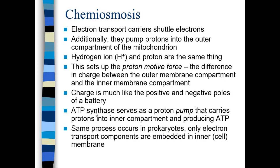The same process occurs in prokaryotes and eukaryotes. Only in eukaryotes, the electron transport chain is in the inner membrane of the mitochondria. In prokaryotes, the electron transport chain is embedded in the cell membrane, or the inner membrane of the cell. Prokaryotes don't have mitochondria, but they do have membranes where the electron transport chain can occur.